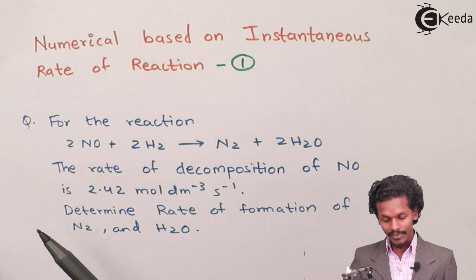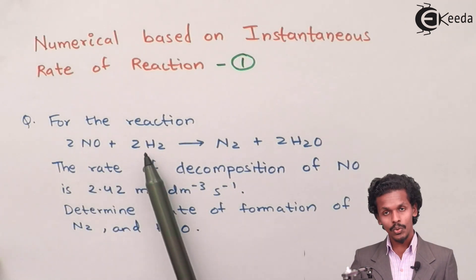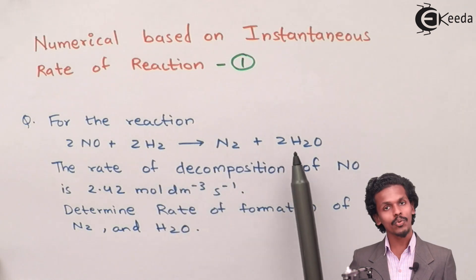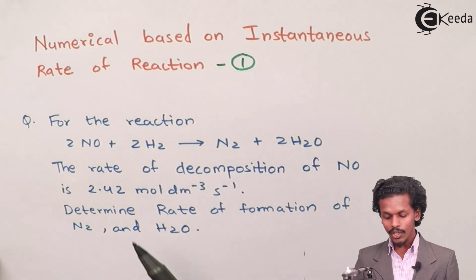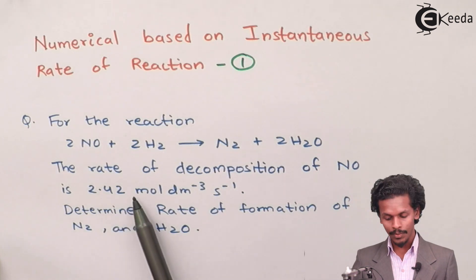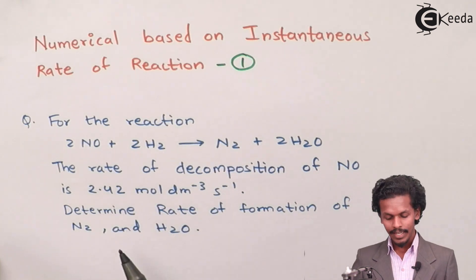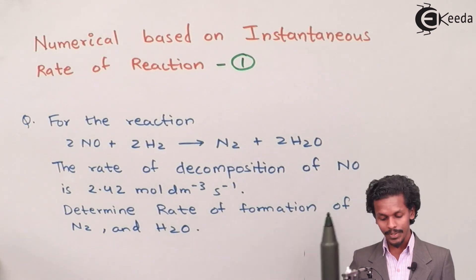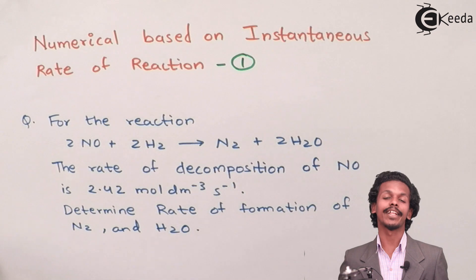The reaction given is: 2NO + 2H₂ → N₂ + 2H₂O. In this reaction, the rate of decomposition of NO is 2.42 moles per dm³ per second, and from that we have to determine the rate of formation of N₂ and the rate of formation of H₂O.